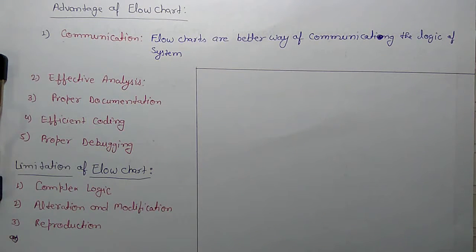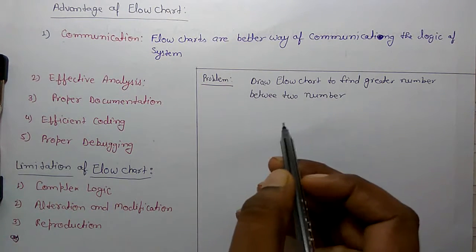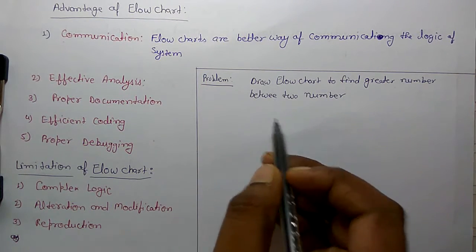Reproduction. As the flowchart symbols cannot be typed, the reproduction of flowcharts becomes a problem. Because you draw the symbols. So this is a problem, and you have to draw a flowchart to find greater number between two numbers.